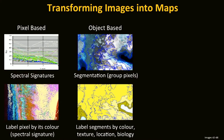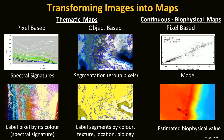Another way to do it is an object-based approach, where segments are characterized by groups of pixels by their texture, color, and size. After segmentation, we look at how to label these different characteristics using their texture, color, location, and biological characteristics. These types of maps are considered thematic maps. We also have continuous maps, which are a result of comparing field data with the pixel values of an image to create a relationship, resulting in a model. This model is then applied to the whole image, resulting in an image of estimated biophysical values.